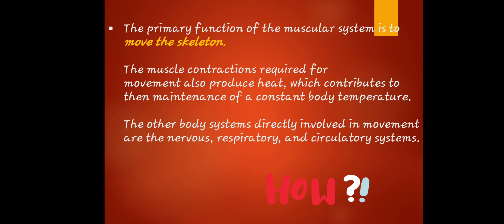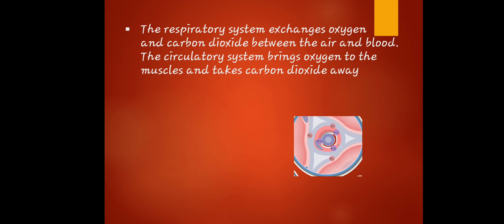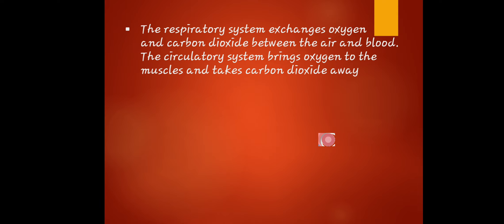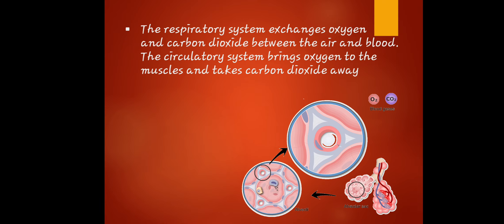The nervous system transmits electrochemical impulses that cause muscle cells to contract — that is how the nervous system is connected to our muscles. The respiratory system exchanges oxygen and carbon dioxide between the air and blood. The circulatory system brings oxygen to the muscles and takes carbon dioxide away.